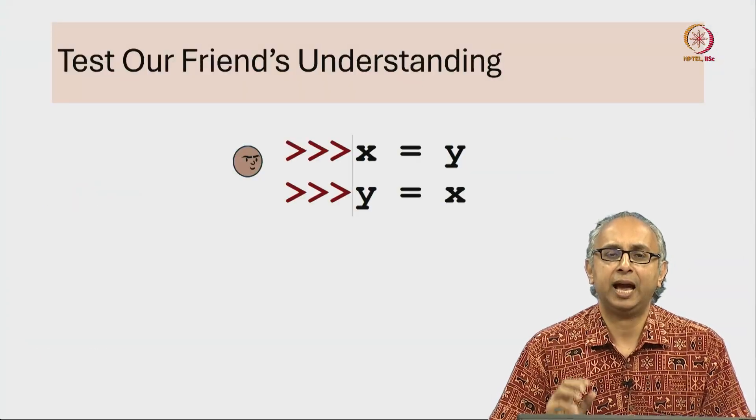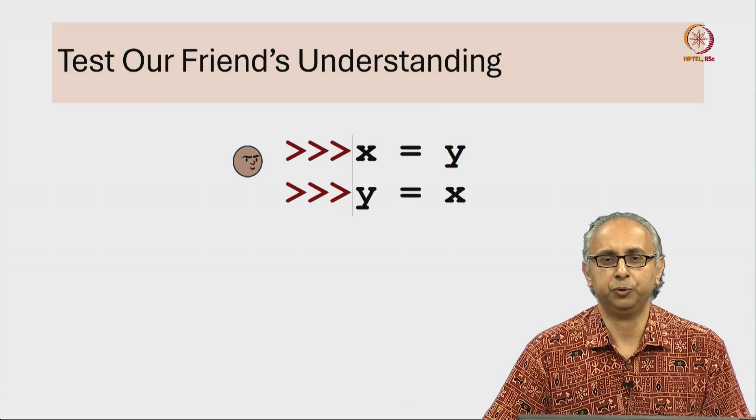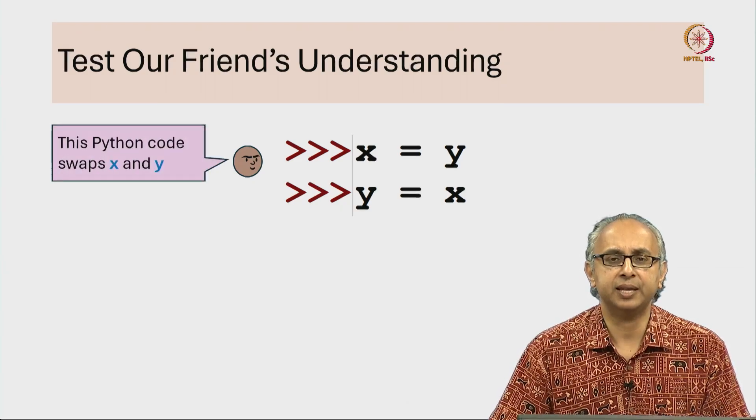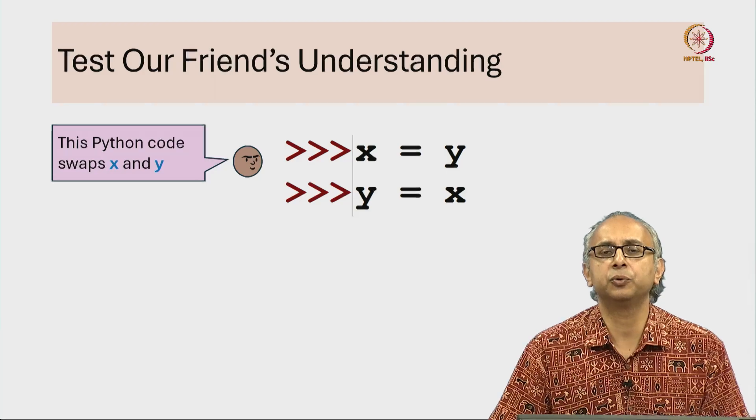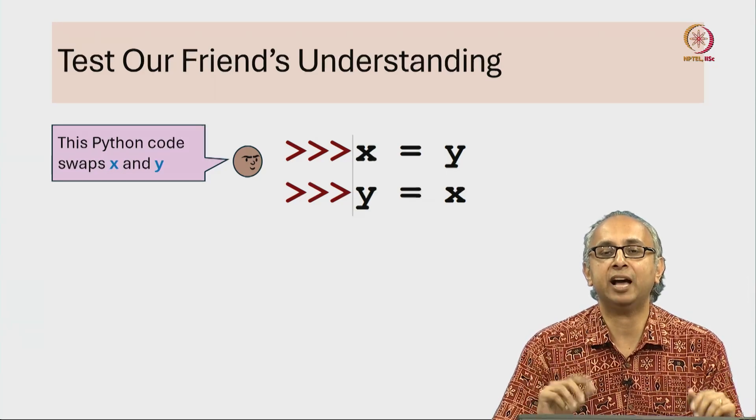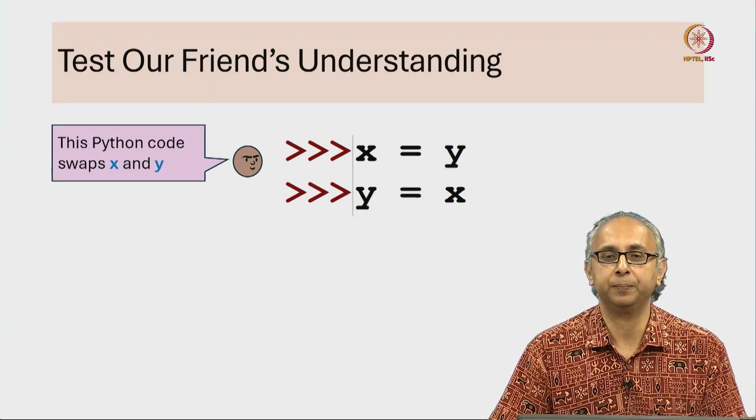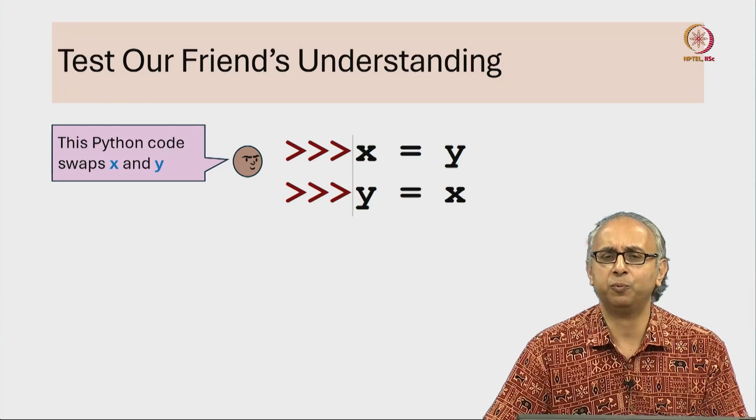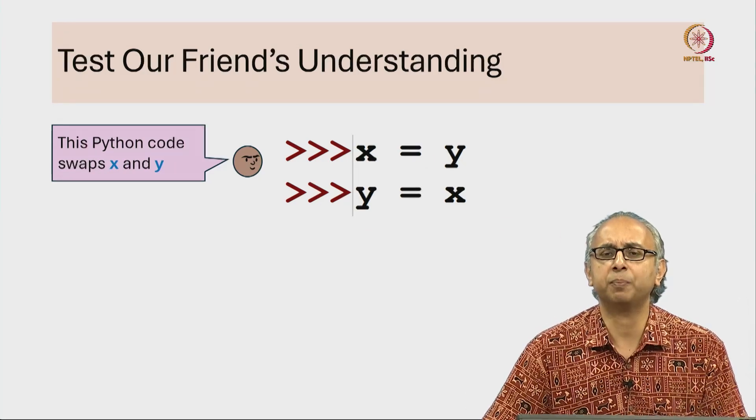Now let's take a look at this simple piece of code. Our friend is staring at this and says that this python code swaps the values of x and y. It seems natural, doesn't it? X is y, y is x, that seems to swap those two. But let's actually visualize this code on python tutor.